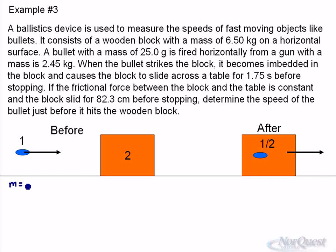We have the block in kilograms, the bullet in grams. We either have to convert everything to kilograms or everything to grams. I'm going to convert everything to kilograms, so the mass is 0.025 kilograms for object 1.